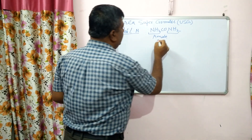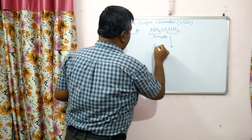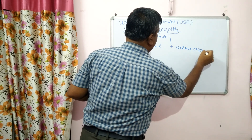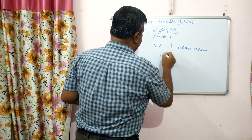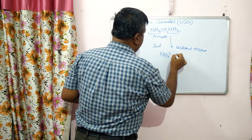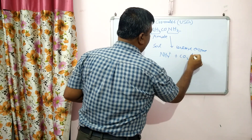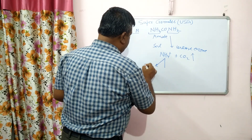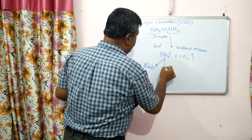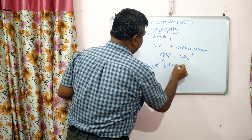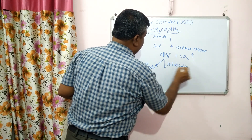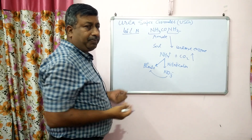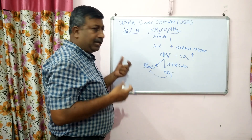When urea is applied in soil, in the presence of urease enzyme, it undergoes hydrolysis and produces ammonium ions plus CO2. The CO2 escapes into the atmosphere. The ammonium ion may be used by plants directly, or it may undergo nitrification and be converted into nitrate, which most plants prefer under aerobic conditions.